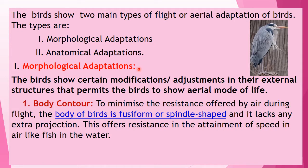Morphological adaptations: birds show certain modifications in their external structure that permit an aerial mode of life. The first morphological adaptation is body contour. To minimize air resistance during flight, the body of birds is fusiform or spindle-shaped, and it lacks any extra projection. This offers minimal resistance in the attainment of speed in air, like a fish in water.